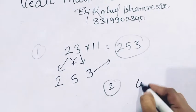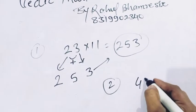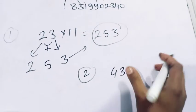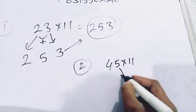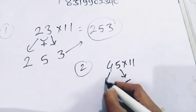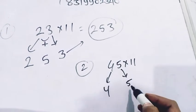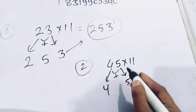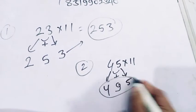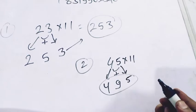Second, if we take 45 into 11, 5 last digit last, 4 first digit first. And add both the digits. 4 plus 5 become 9. So this is your answer. Got it?